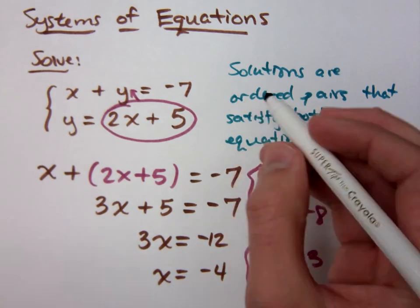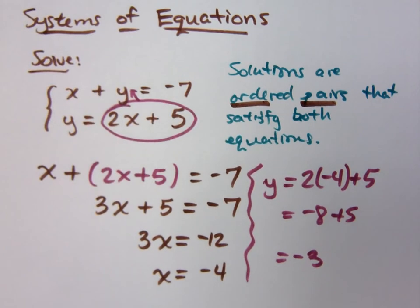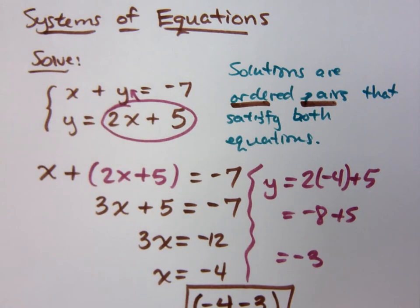The solutions, guys. They're ordered pairs. Negative 4, negative 3. Are you sure about that? How do you know this is right? We don't. You do? You plug it back into the... I did the problem, so you know it's right.